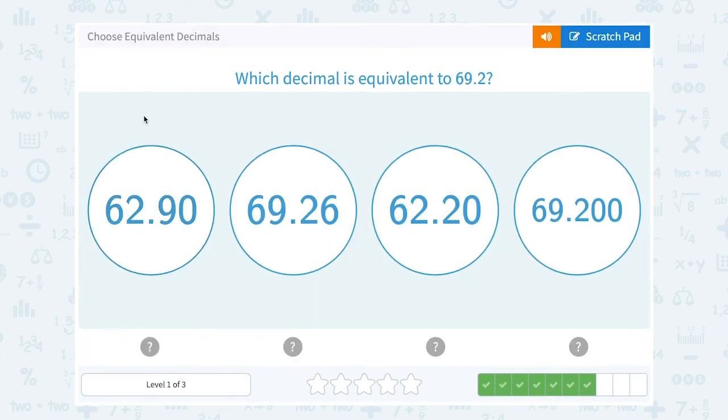Which decimal is equivalent to 69.2? I need it to say 69.2 and then just have some zeros on the end. So that would be this last one, 69.200.